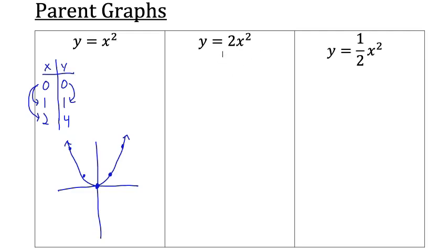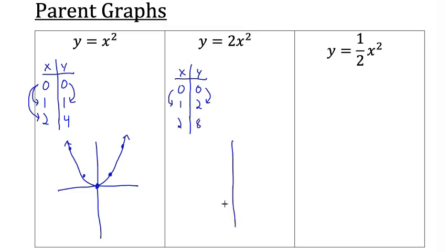Here's another parent graph: y equals 2x squared. Starting with x = 0, we get 0. When x = 1: 1 squared is 1, times 2 is 2. So when we go over 1, this time we go up 2. When x = 2: 2 squared is 4 times 2 is 8. The graph of y equals 2x squared is going to be steeper than y equals x squared. When we went over 2, we went up 8.